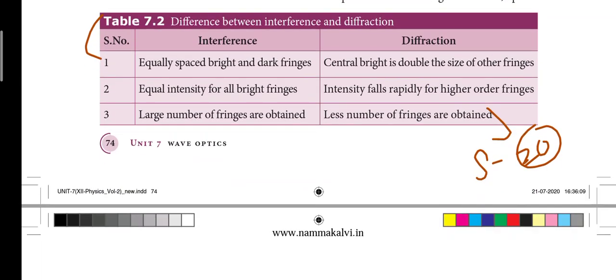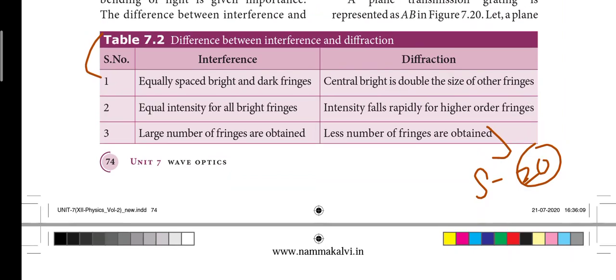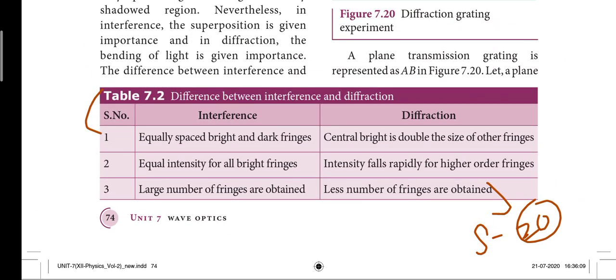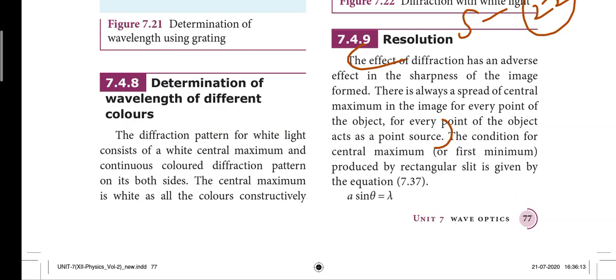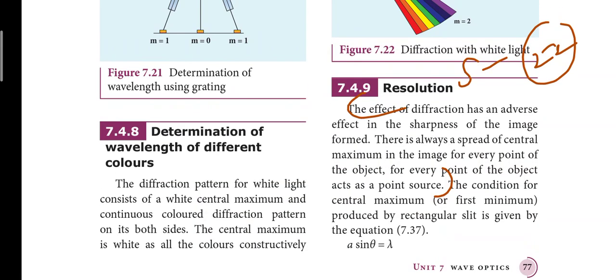Next: 28th short answer, page number 74 — difference between interference and diffraction, 3 points. You have to write the twentieth short answer. If you have any doubt, please comment. Next, page number 77: resolution — that is the first effect of diffraction. The next 4 or 5 lines — act as a point source, 6th line. So that is the twenty-second short answer.